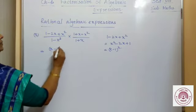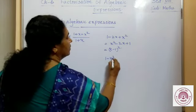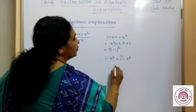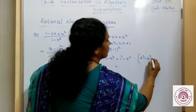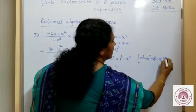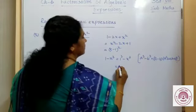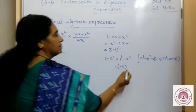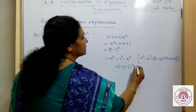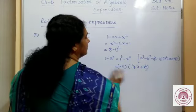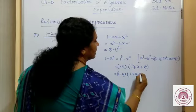So, this is (x - 1)² upon (1 - x³). Now, 1 - x³ = 1³ - x³, which is of the a³ - b³ form. Using the formula a³ - b³ = (a - b)(a² + ab + b²), this equals (1 - x)(1 + x + x²).